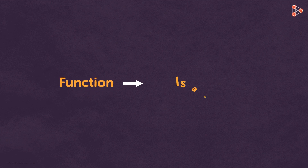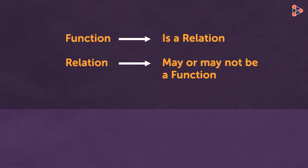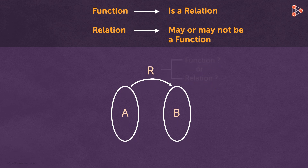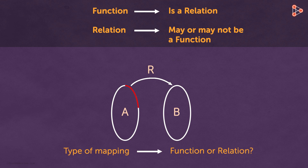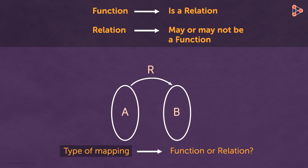We know that every function is a relation but not every relation is a function. Let's say there is a relation R from set A to set B. How do we know if this relation R is a function or a relation? Can the type of mapping from set A to set B help us with this information? Absolutely! Let us look at the different types of mapping from set A to B to know if the relation is a function or not.